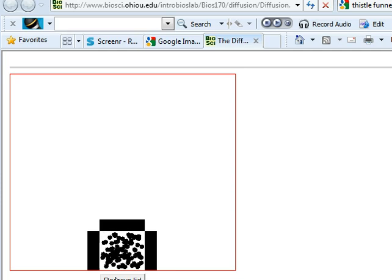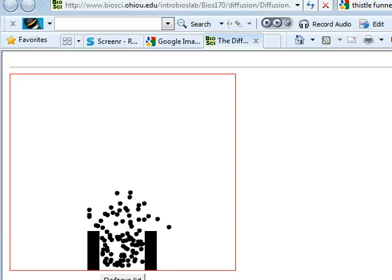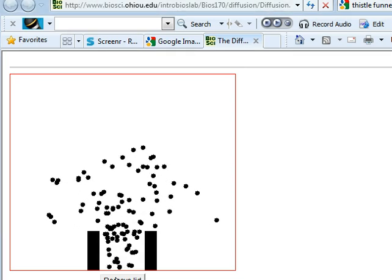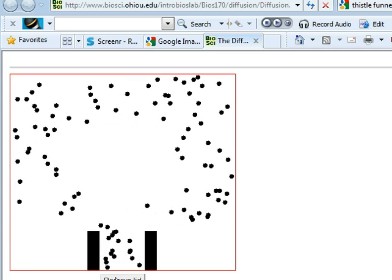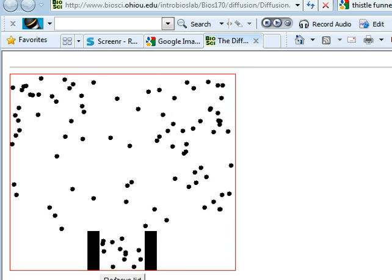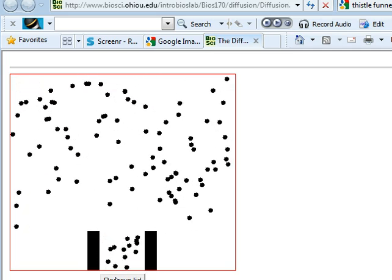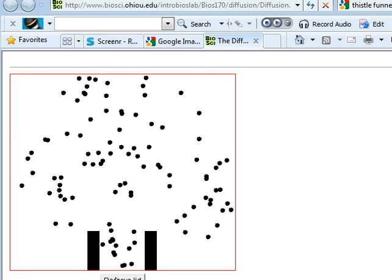Right, we're going to remove the lid, and the particles that were confined in a concentrated space will spread out through natural random chance movement. It's much more likely the particle will move away from the concentrated area than towards it.